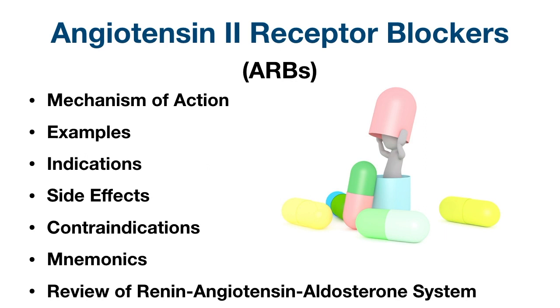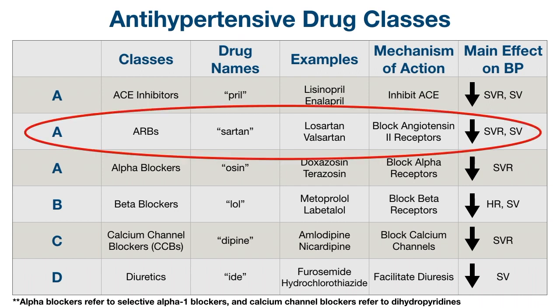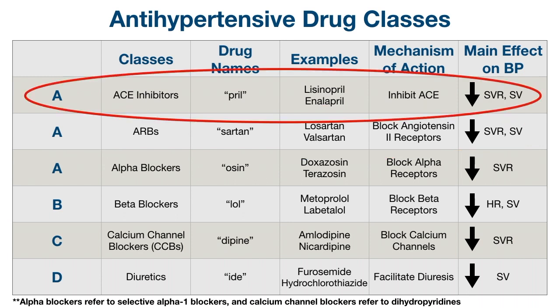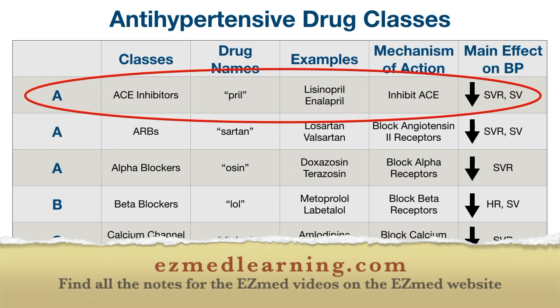We're also going to do a quick review of the renin-angiotensin-aldosterone system because angiotensin 2 receptor blockers inhibit the normal physiology of that system. In a previous EZ-Med video, we went through a chart and did a broad overview of the main antihypertensive classes. We also talked about ACE inhibitors in a previous video, and there are a lot of similarities between ACE inhibitors and ARBs, so those are linked in the description below.